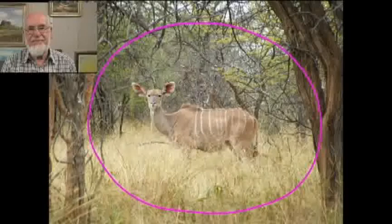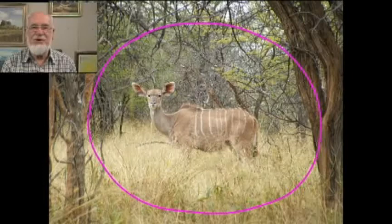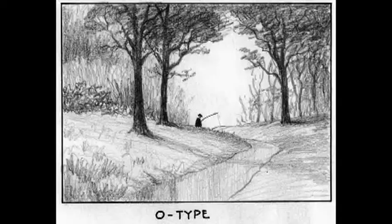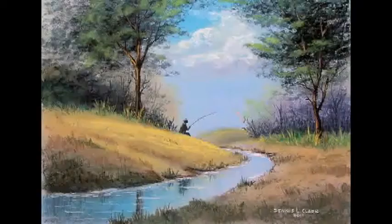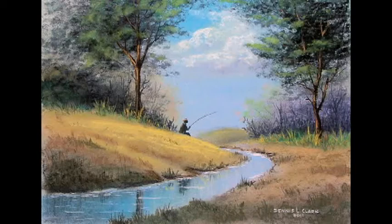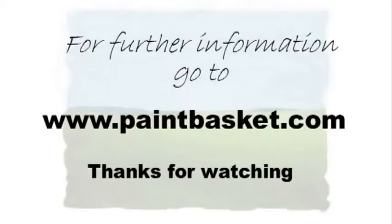The trees, the foreground grass, and the distant bush nicely surround the kudu. When painting, these areas can be darkened to emphasize the O-type composition. From this small pencil sketch I developed the O-type composition into a pastel painting — a beautiful painting.